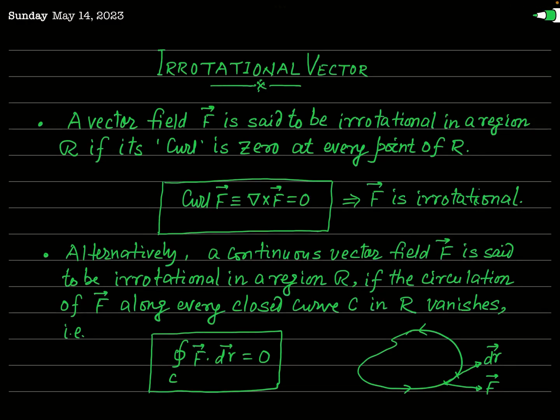What is an irrotational vector? A vector field F is called an irrotational vector in a region R if the curl of this vector field F vanishes, or is equal to 0, at every point of this region R. Mathematically, if curl of F is equal to 0, then this vector field F is called an irrotational vector. This is a very simple concept.